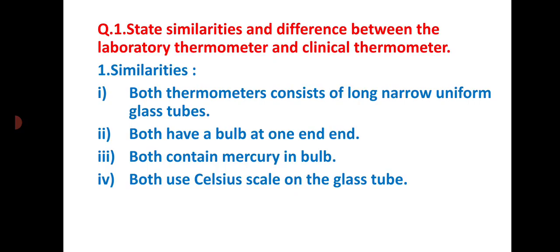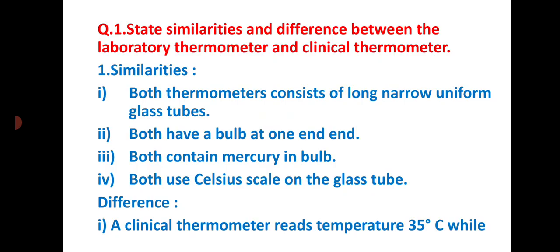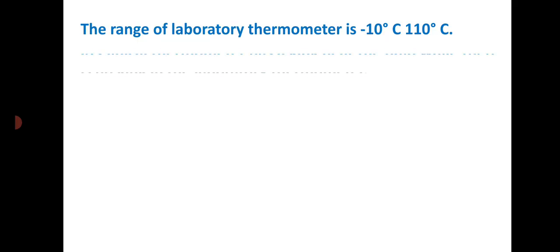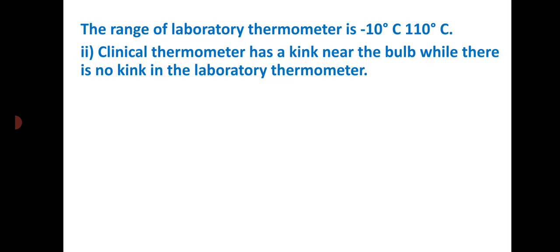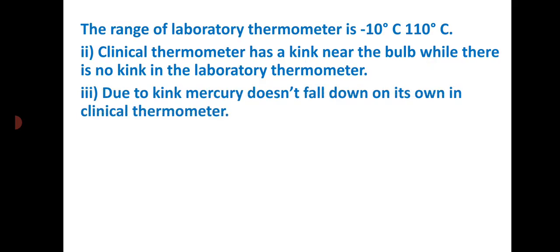Now the differences. First, clinical thermometer reads temperature from 35 degrees Celsius while the range of laboratory thermometer is 10 degrees Celsius to 110 degrees Celsius. Second, clinical thermometer has a kink near the bulb while there is no kink in the laboratory thermometer. Due to the kink, mercury does not fall down on its own in clinical thermometer.